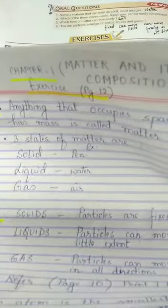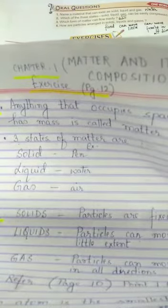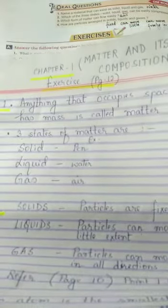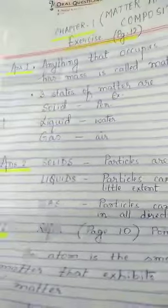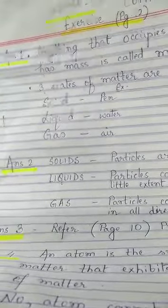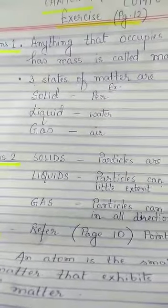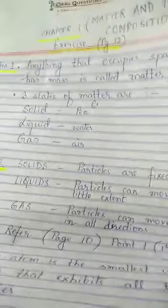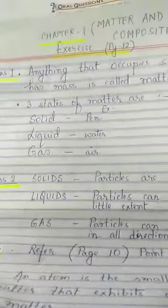Now, question number 3. With the help of an activity, prove that a stone has mass and occupies space. Now, this answer is clearly given on page number 10. Point number 1. First experiment which is given, that one is the answer to question number 3.